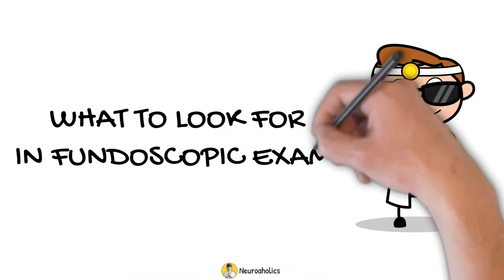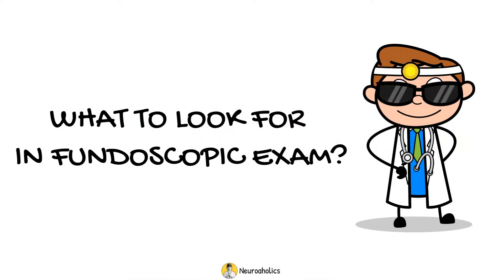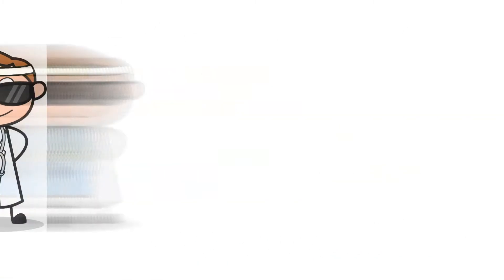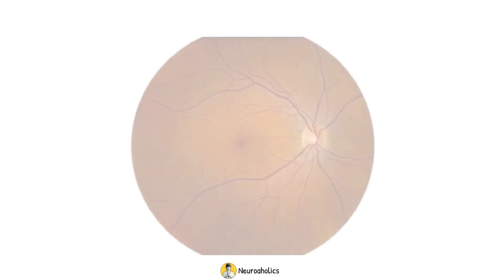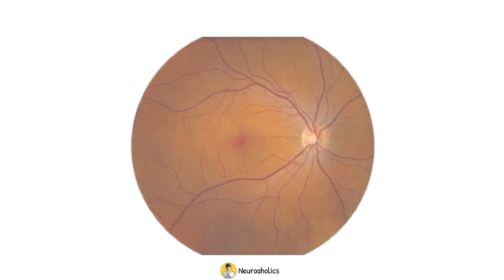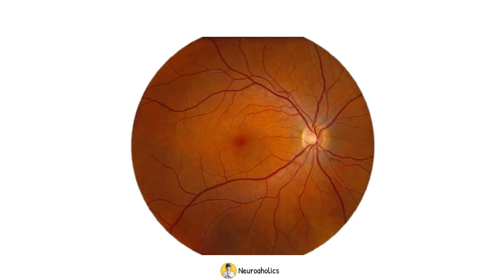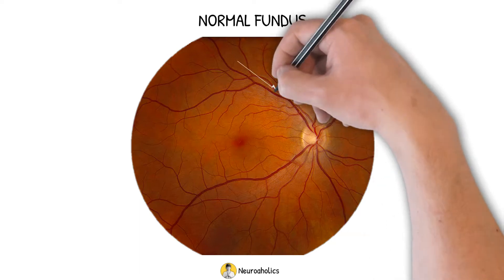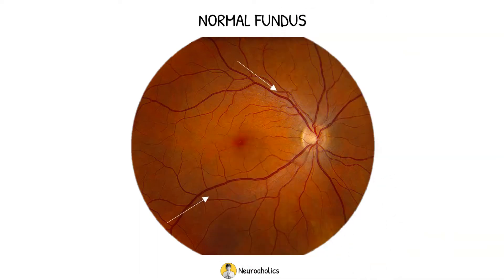What to look for in a fundoscopic exam. You have to recognize the key parts of the retina: the optic nerve head, optic disc, and the macula. The optic disc is found by tracing any of the blood vessels to the point of coalescence, towards the nasal area.